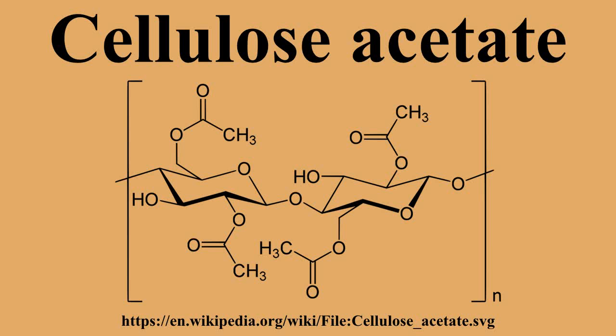Spectacle frames are commonly made with cellulose acetate. Cellulose acetate is marketed under various trade names such as Tenite by the Eastman Chemical Company, as well as ZYL, Xylonite, Cellan, and Rhodoid. Related chemical products include cellulose acetate butyrate and cellulose acetate propionate, both of which are used in inks and coatings. The chief difference between these and cellulose acetate is solubility in a wider range of solvents.